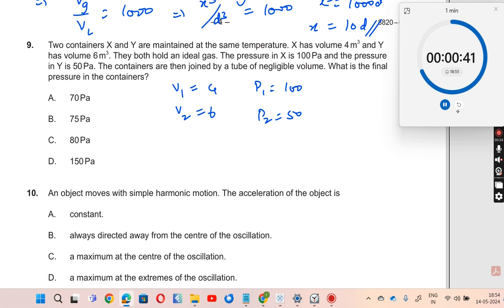The containers are then joined by a tube of negligible volume. What is the final pressure in the container? What is the final pressure when they are joined?